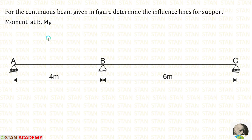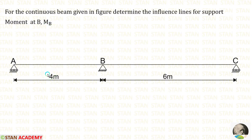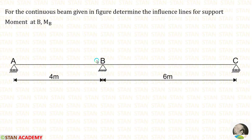Hello everyone. Today we are going to do a problem based on influence line diagram. Let us read the question: for the continuous beam given in the figure, determine the influence lines for the support moment at B, MB. In this beam there are two spans, span AB and span BC. We have been asked to draw the influence line diagrams for the support moment at point B.